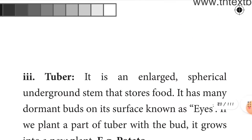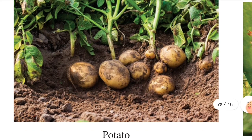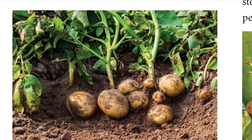Next is the tuber. It is an enlarged and spherical underground stem that stores food and has many dormant buds on its surface known as eyes. If you plant a part of a tuber with a bud, it grows into a new plant. Example: potato.